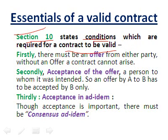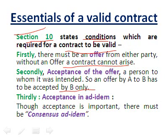Firstly, there must be an offer from either party — without an offer, a contract cannot arise. Secondly, there must be acceptance of the offer by the person to whom it was intended; so an offer by A to B has to be accepted by B only. Thirdly, there must be consensus ad idem — acceptance is important, but the acceptance must involve a meeting of minds.